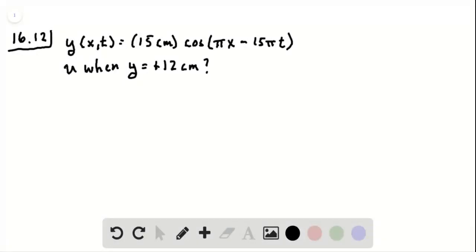Problem 16.12: We're given the function for a wave on a string, where x and t are in meters and seconds respectively. We want to find the transverse speed u for any point on the string when its displacement is positive 12 centimeters. This is a bit tricky because we have a particular displacement but no information about x or t.